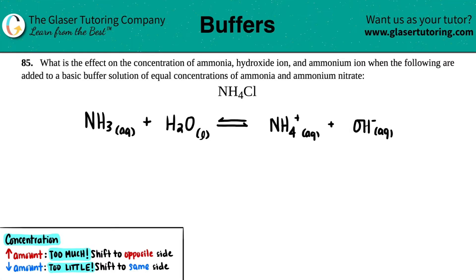Number 85. What is the effect on the concentration of ammonia, hydroxide ion, and ammonium ion when the following are added to a basic buffer solution of equal concentrations of ammonia and ammonium nitrate? In this case, we're adding ammonium chloride, which is NH4Cl.